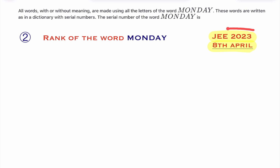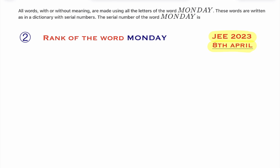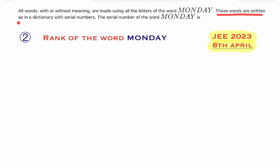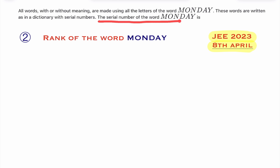This question was given in JEE 2023. The actual question is: all the words, with or without meaning, are made using all the letters of the word MONDAY. These words are written as in a dictionary with a serial number. The serial number of the word MONDAY is?